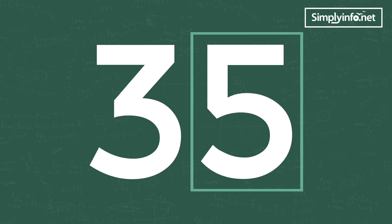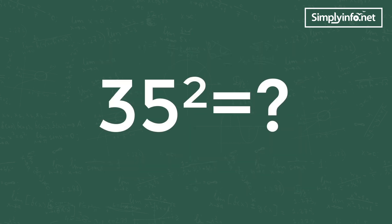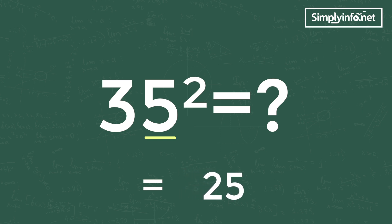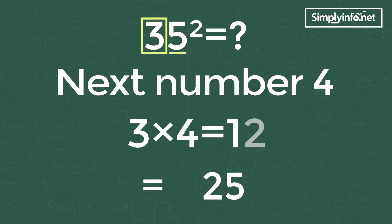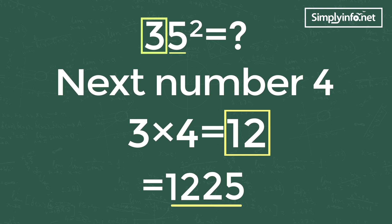Let's go to the problem: 35 square is how much? Take the ones digit number, that is 5, and the square of 5 is 25. Write 25 in the ones digit of the answer as shown here. Then take the remaining digits of the problem and multiply with the next number — remaining digit is 3 and its next number is 4. By multiplying 3 and 4 we get 12. Write this in the answer. The answer is 1225.